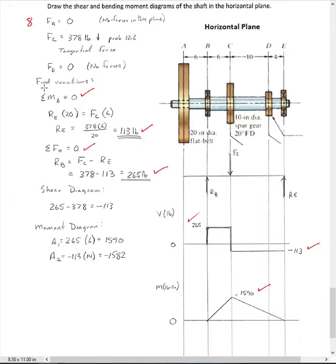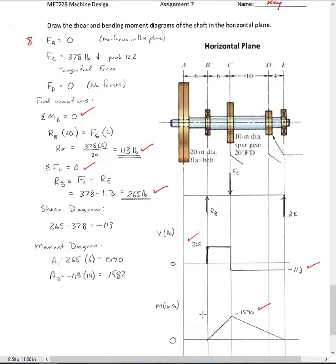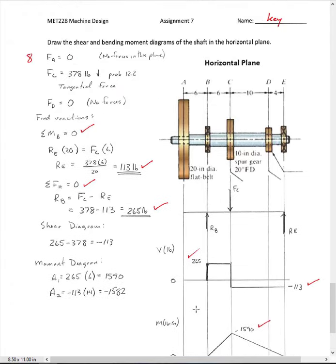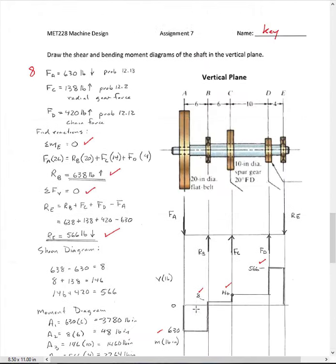So then I could create, take my moments about B, set them equal to 0, and I've got my reaction at E is 113 pounds. And then I solve for my reaction at B. And then I draw my shear diagrams and then my moment diagrams. Okay, I just wanted to give you feedback on this assignment. Thank you.